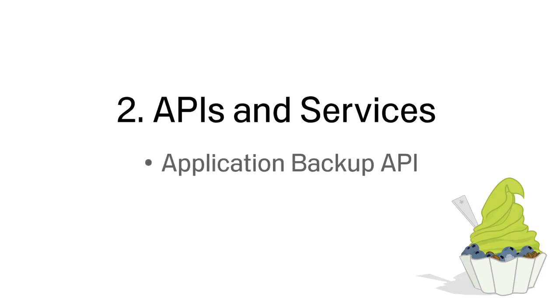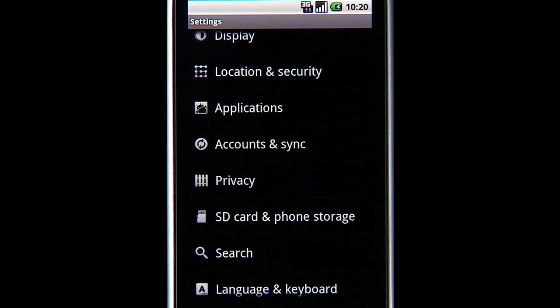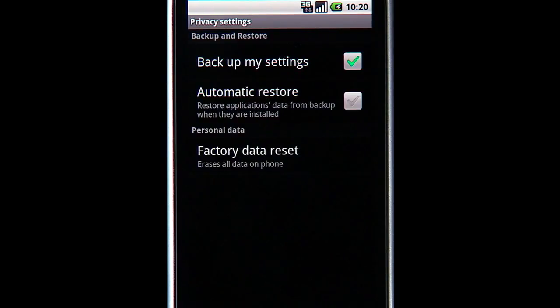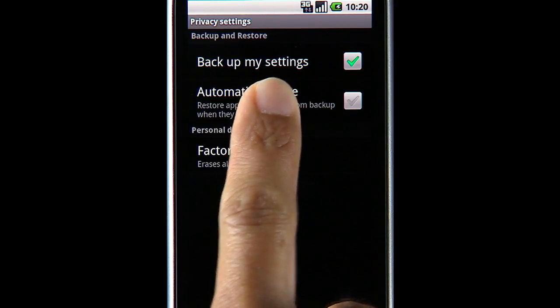The app backup API enables any app to have its data backed up and then restored when installed on a new device. The feature is controlled by users via the automatic restore setting on their device.